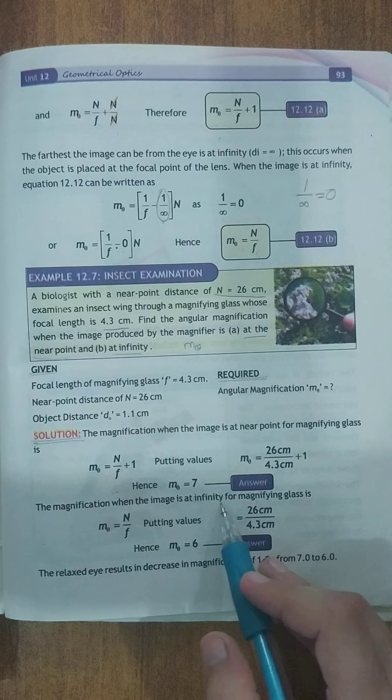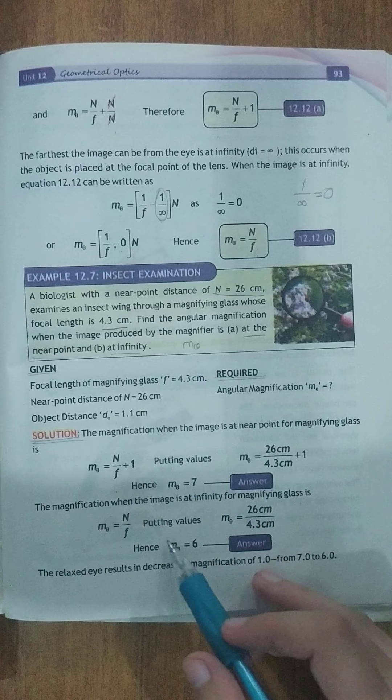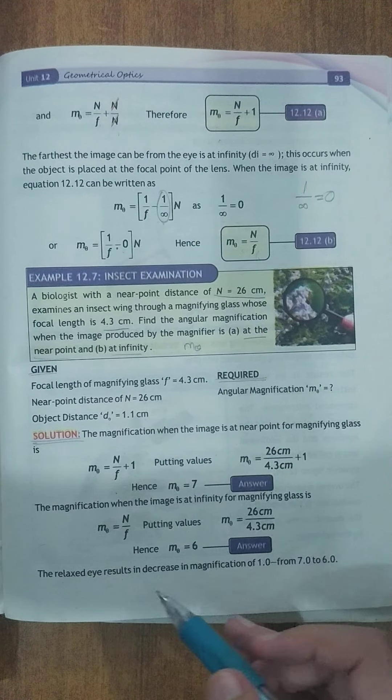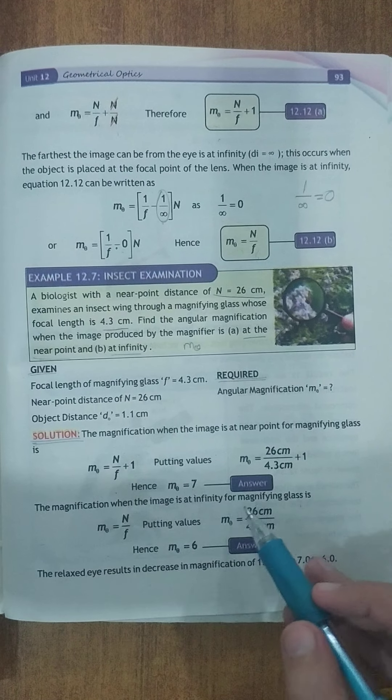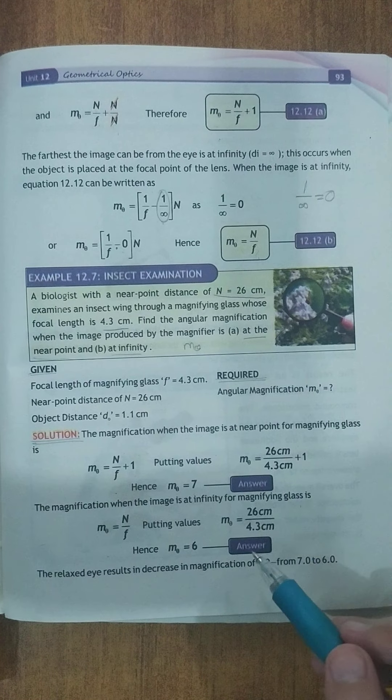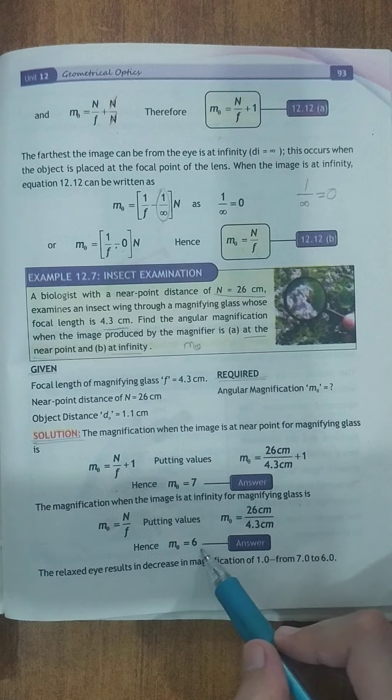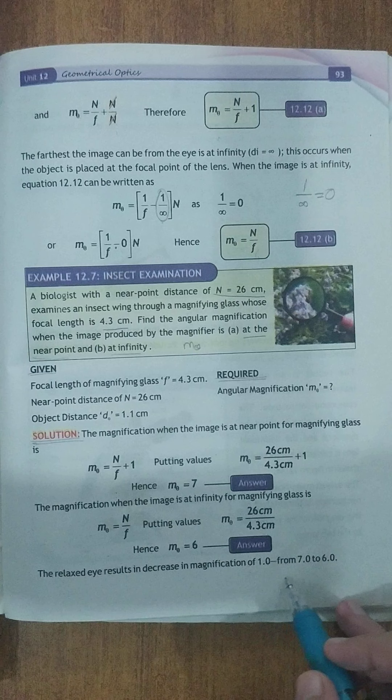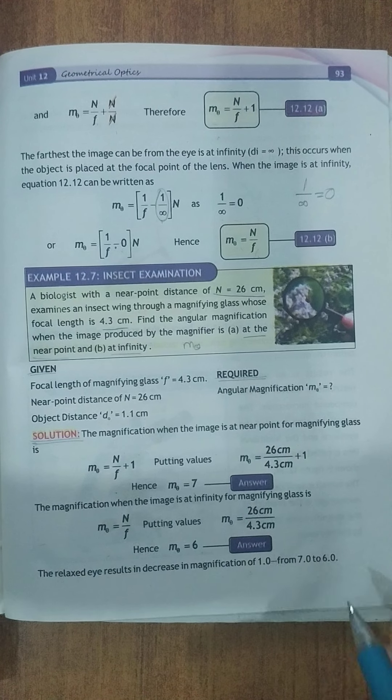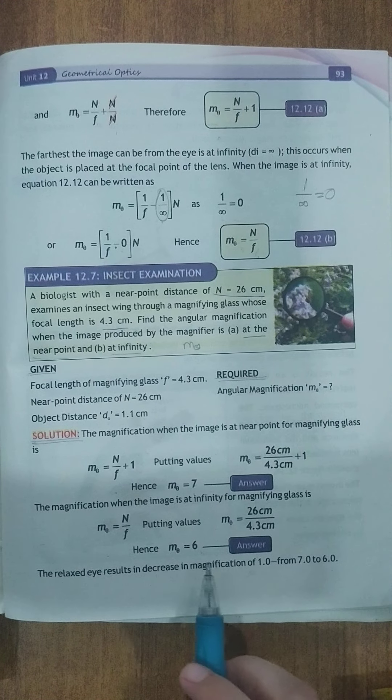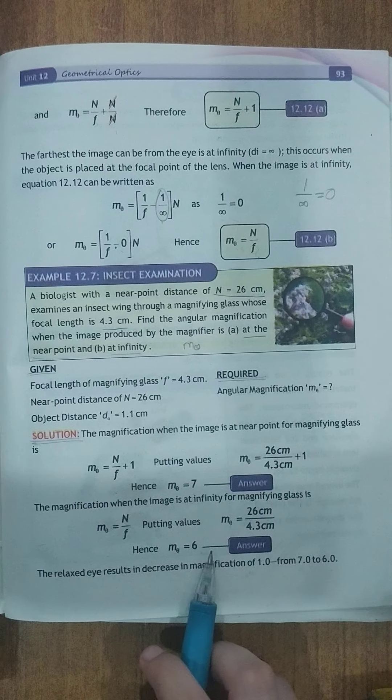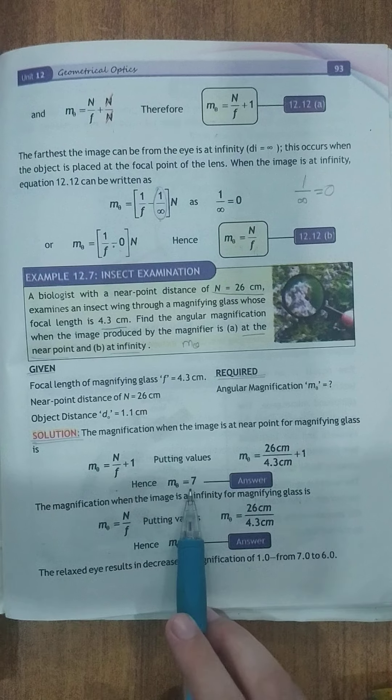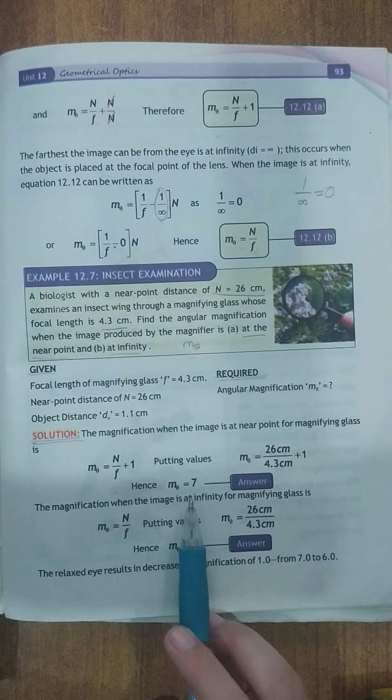The magnification when the image is at infinity for magnifying glass is. Humne is equation mein padha tha ki M theta equals to N by F for farthest images to yahaan pe aap ismein values put karenge aur values put karne ke baad aapke paas M theta equals to 6 aa rahi hai. The relaxed eye results in decrease in magnification of 1 from 7 to 6. To far objects ke liye far images jo hai vo aapko 6 times of the object nazar aayenge aur jo near image hai vo object ke 7 times aapko magnified nazar aayege jab aap magnifying glass ko use karenge.